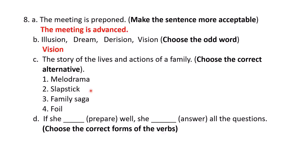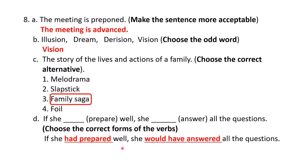C: 'The story of the lives and actions of a family' — choose the correct alternative from melodrama, slapstick, family saga, and foil. The answer is family saga. D: 'If she prepared well, she answered all the questions' — choose the correct forms. Again from conditionals — the answer is: 'If she had prepared well, she would have answered all the questions.'